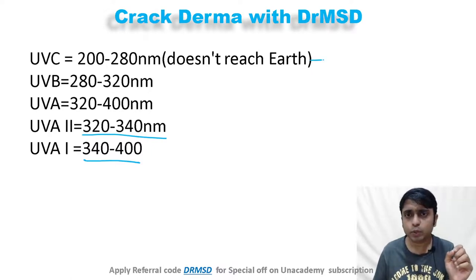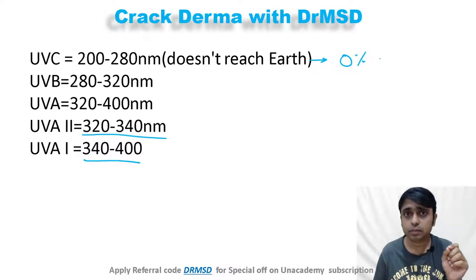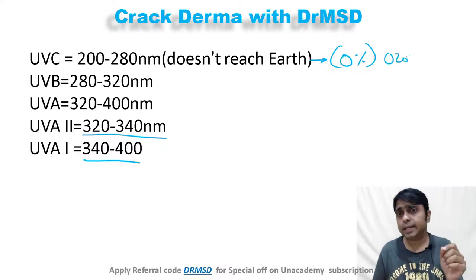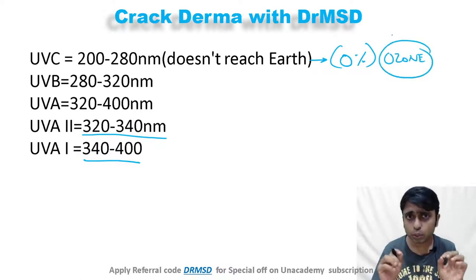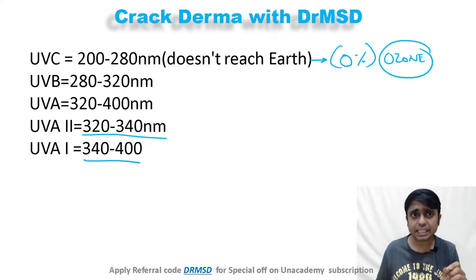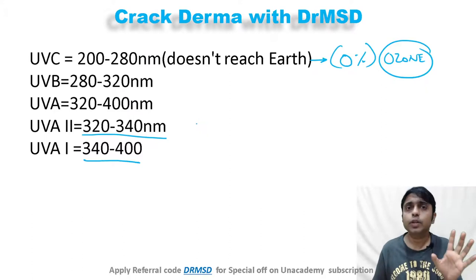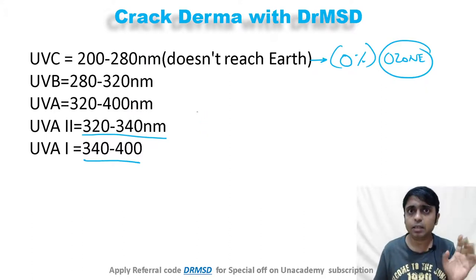UVC is present in zero percent of the sunlight which enters the earth's surface, because the ozone layer completely blocks UVC radiation. Not even a single percent of UVC will be present in sunlight at the earth's surface.